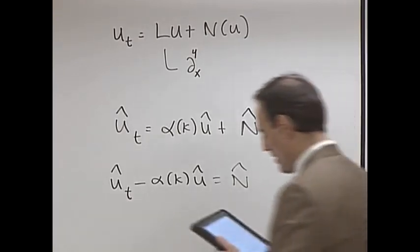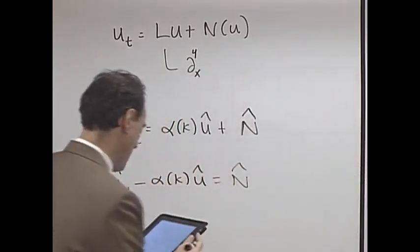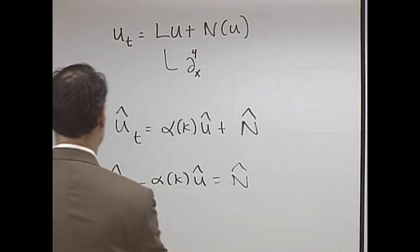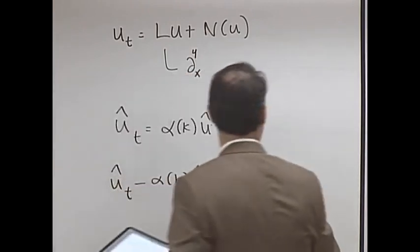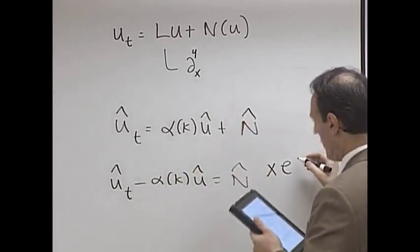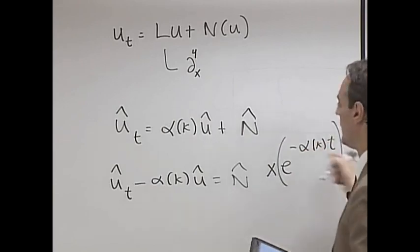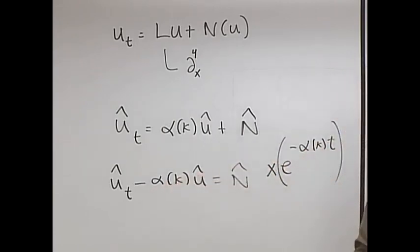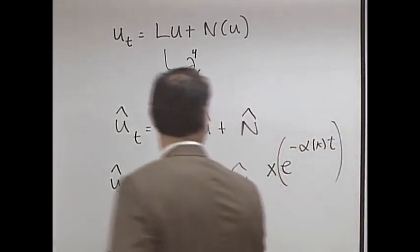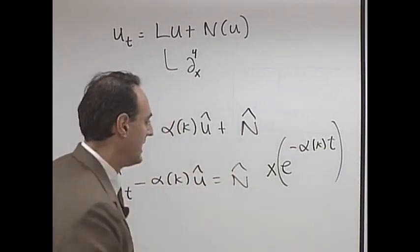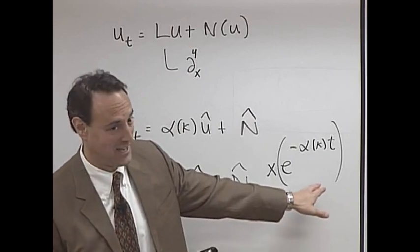So here's what I'm going to do: I'm going to multiply everything, this whole equation, by e to the minus alpha k t. And by the way, this is like my mu that I just had before.